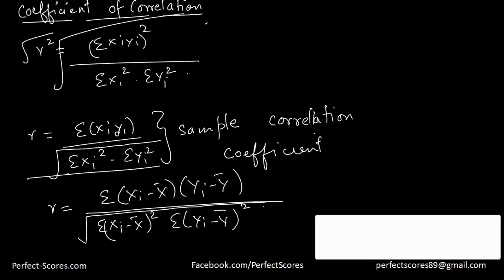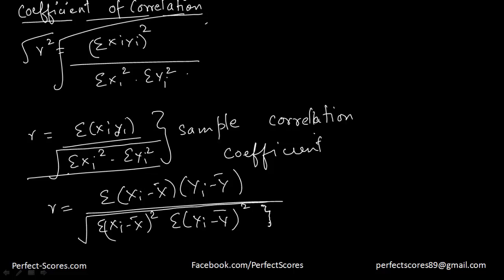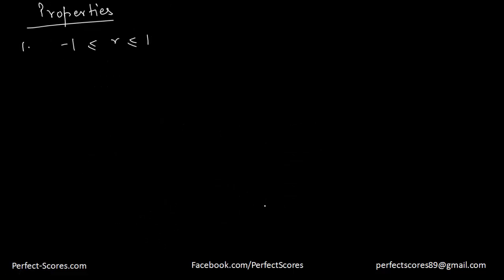The denominator is always going to remain positive, so everything depends on the numerator term. If the numerator turns out to be negative, the whole expression is negative; if it turns out to be positive, the whole expression is positive. The value of r equal to 1 means that x and y are perfectly positively correlated with each other, and when r is equal to negative 1 that means they are perfectly negatively correlated with each other.